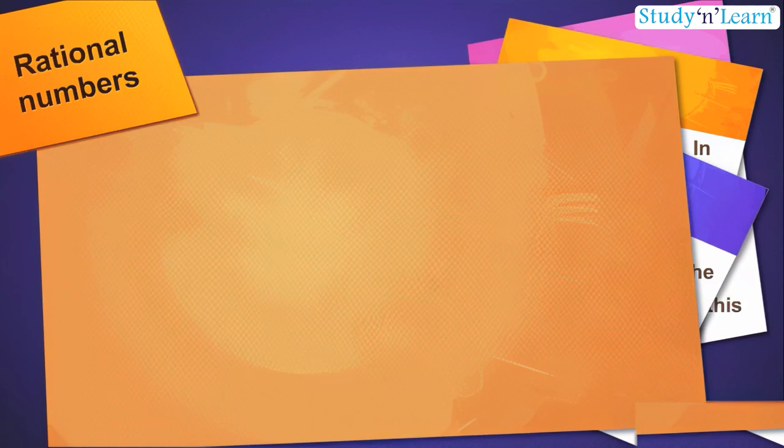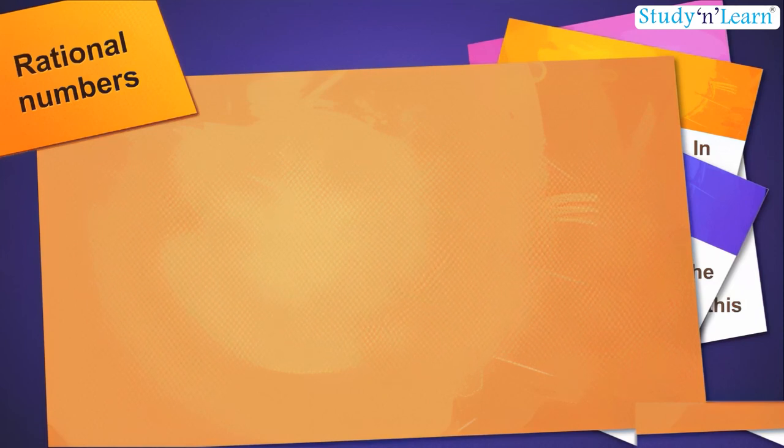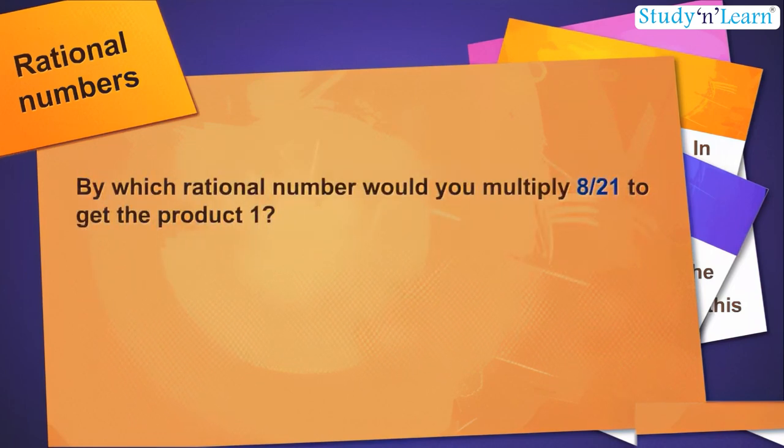Now we can find the negative of a number. Now let us see what is reciprocal. By which rational number would you multiply 8 by 21 to get the product as 1?